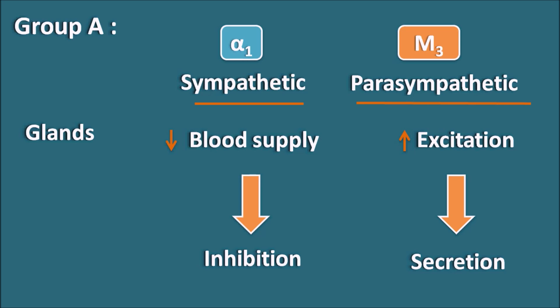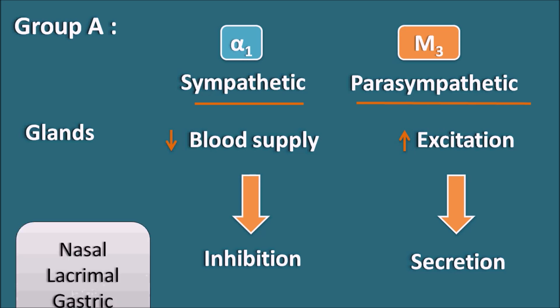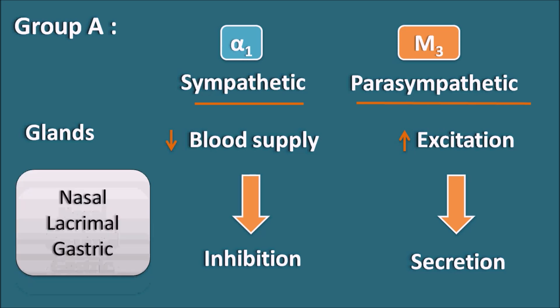The parasympathetic system produces excitation of the glands, which results in secretion. The glands involved here include nasal glands, lacrimal glands, and gastric glands, which are affected by the sympathetic and parasympathetic system in this way. Two other glands — sweat glands and salivary glands — are not included here because the two divisions produce different actions at those glands.